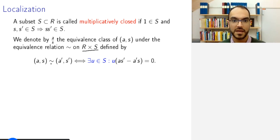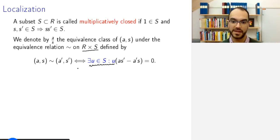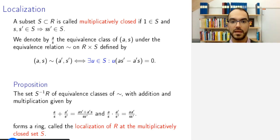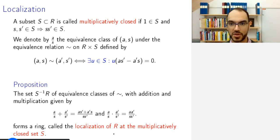The equivalence relation is that (A, S) is equivalent to (A', S') if and only if there exists some element U in S such that U times (A·S' − A'·S) equals zero. Then you can check that the set of all equivalence classes with addition and multiplication defined accordingly is well defined and forms a ring. This is what we call the localization of the ring R at the multiplicatively closed set S.